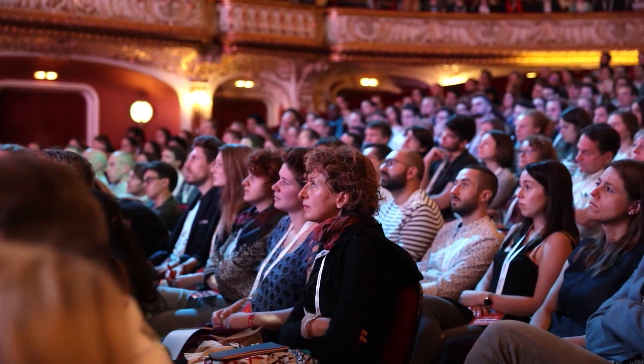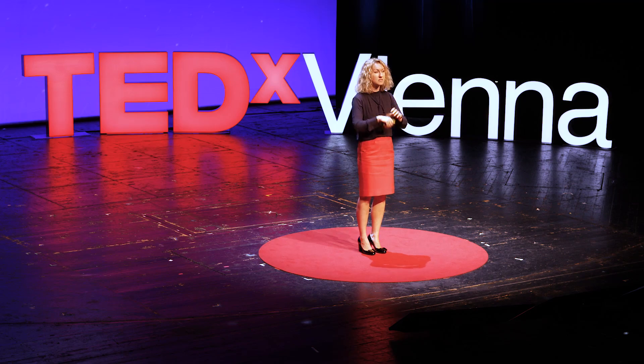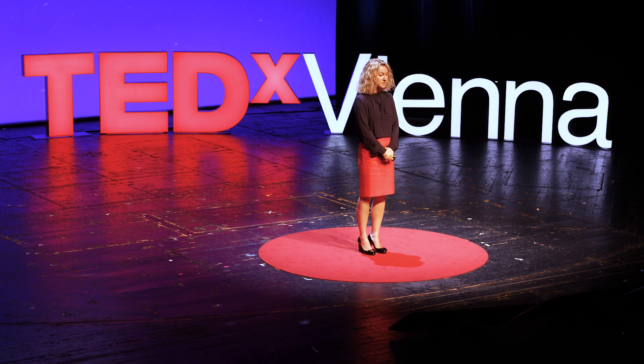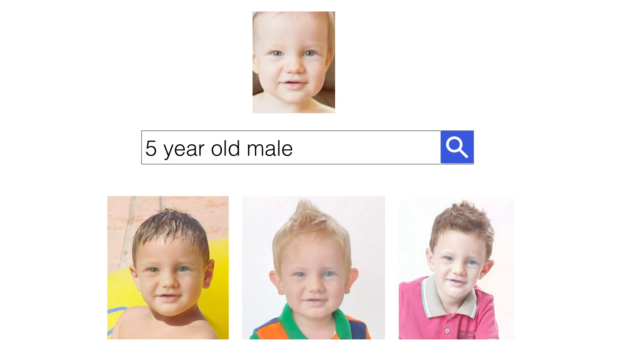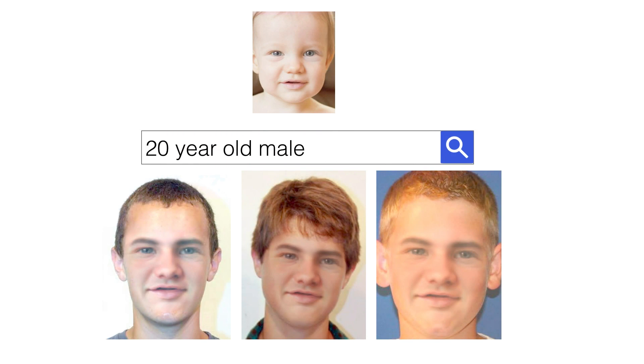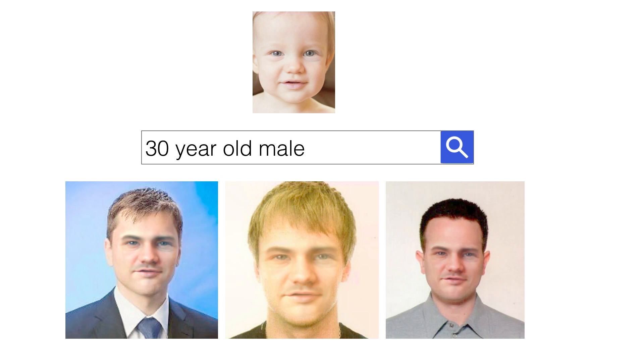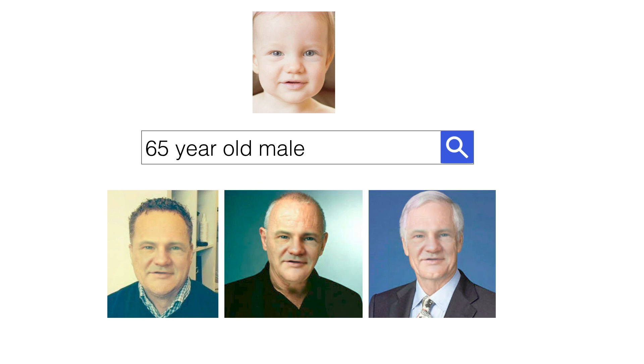We wanted to combine the two projects: imagining how a face looks in the future, and imagining it combined with a full portrait of the person. Here's an example where we take a baby photo, search for a five-year-old male, combine the age progression of the face, and create different hairstyles to imagine what the person might look like with different hair color or clothing. We can imagine how he looks as a 20-year-old male, a 30-year-old male, or even a 65-year-old male.